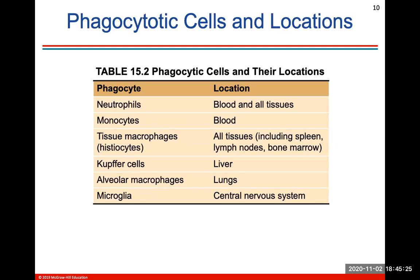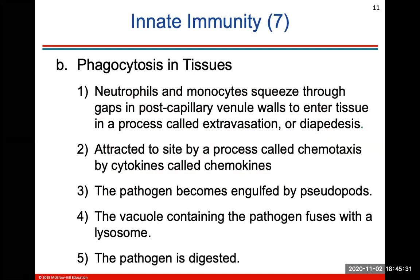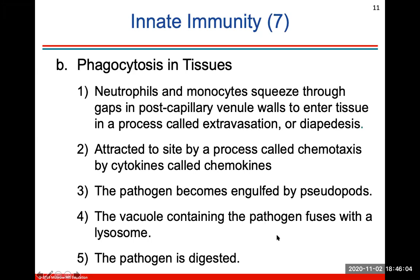Phagocytosis in tissues takes you through a couple of steps. Neutrophils and monocytes will squeeze through gaps in capillary venule walls in a process called diapedesis. They'll be attracted to a site by a process called chemotaxis by cytokines called chemokines — a specific protein that will attract these neutrophils and monocytes. Then the pathogen becomes engulfed by pseudopods, and the vacuole containing the pathogen will fuse with a lysosome, which is responsible for digesting that pathogen.